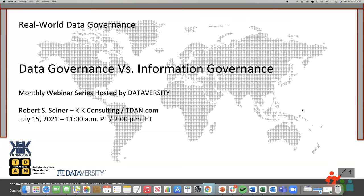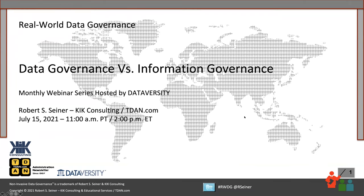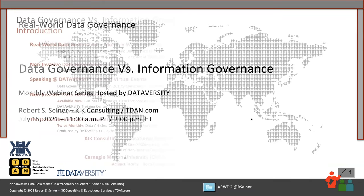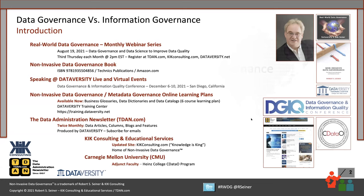There just seems to be so much information that is hidden in our organizations, in apps, and in different places. We need to get the most value that we can out of that information. A lot of organizations are referring to it as data governance, and then other organizations are referring to it as information governance. Let's talk about what the difference is between data governance and information governance, or even if there really is a difference.